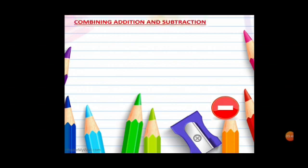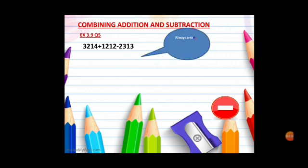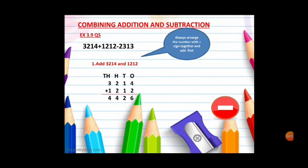The next is combining addition and subtraction. Again I am taking one example from the exercise. This is the question. We have to follow some rules here. Always arrange the number with plus sign together and add first. Our first step is add 3214 and 1212, means we are going to plus first. Here is the answer, 4426, but this is not the final answer.